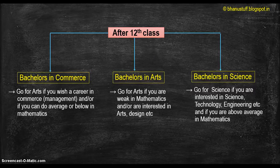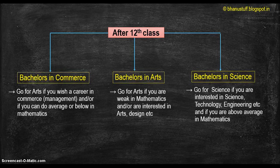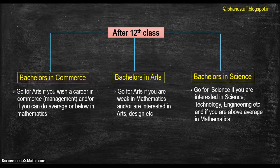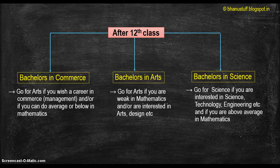Hello brothers and sisters, this is Bono from BonoStuff and I am here to discuss career options and course choice after your twelfth class. This is the first part of the course. After twelfth class you can go in any of three ways: bachelors in commerce (BCom), bachelor of arts (BA), or bachelors in science, which includes engineering, medical, and BSc courses. We will first explore BCom.